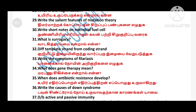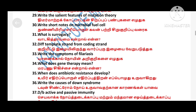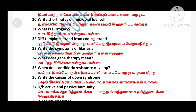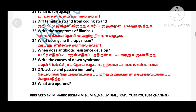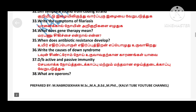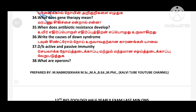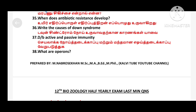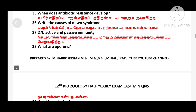What is abiogenesis? Differentiate template strand from coding strand. Write the symptoms of filariasis. What does gene therapy mean? When does antibiotic resistance develop? Write the causes of Down syndrome. Differentiate between active and passive immunity.